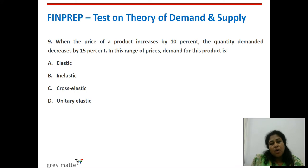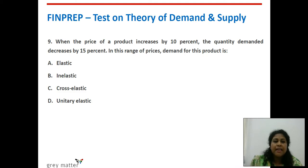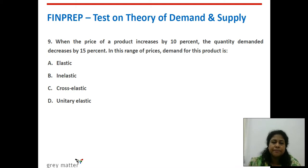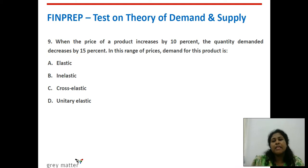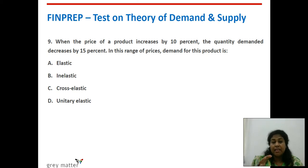Ninth question: when the price of a product increases by 10%, the quantity demanded decreases by 15%. In this range of prices, demand for this product is what? We have an increase in price of 10% and a decrease in quantity demanded of 15%. The influencing factor is smaller, but the response is very high — more than 10%. Therefore, demand is elastic. Option A is the right answer.